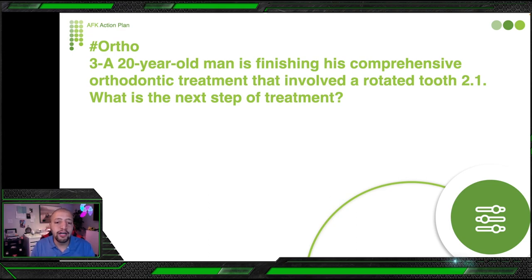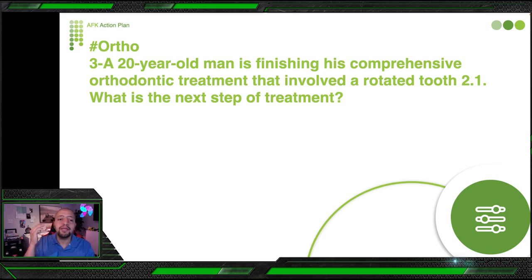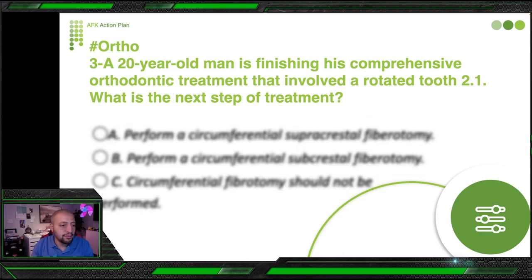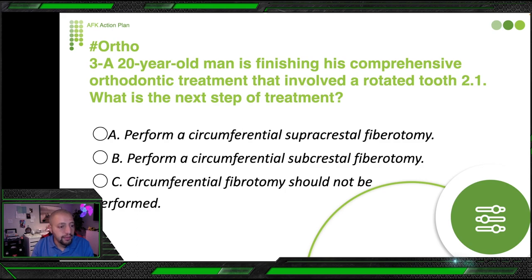Third question, also ortho: a 20-year-old man is finishing his comprehensive orthodontic treatment, which involved a rotated tooth (tooth #21). Comprehensive orthodontic treatment means it was a big, complex treatment — not just one problem. He had many problems but we're focused on the rotated tooth. What is the next step of treatment now that the tooth is rotated to the correct position?